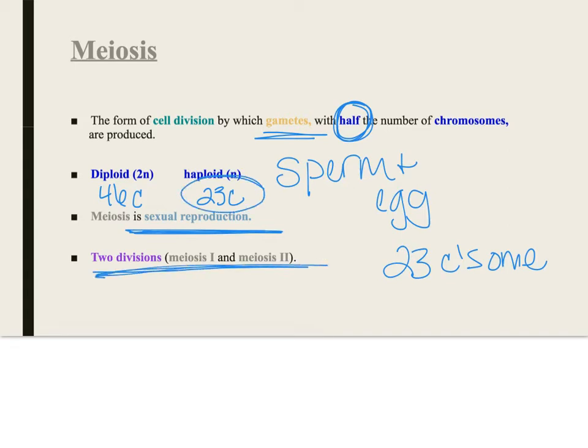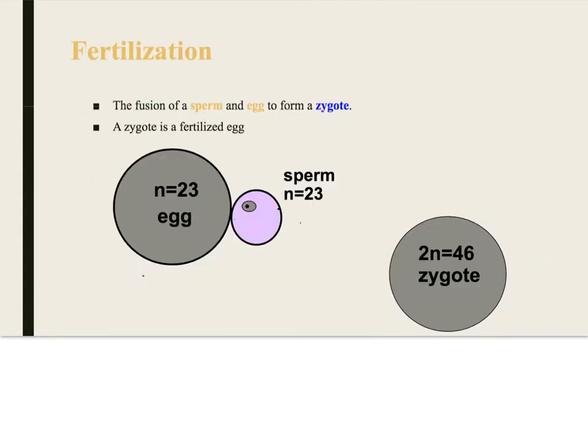Now because you're getting down to haploid numbers, you've got two divisions. The cells divide twice. Now this only happens in sperm and egg cells. Mitosis happens everywhere else, right? Mitosis is happening when we grew our onions in the liquid. That's what's causing our bodies to grow, to repair. Sperm and eggs is all about making more babies.